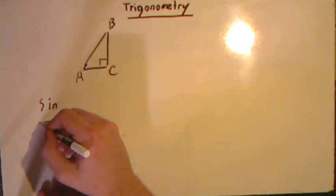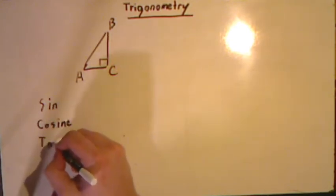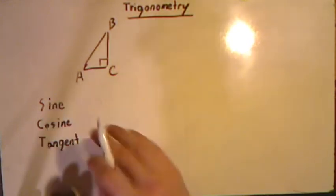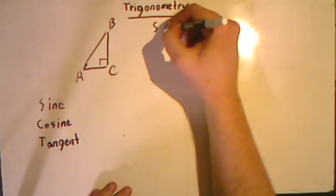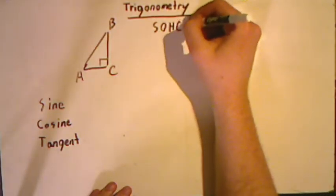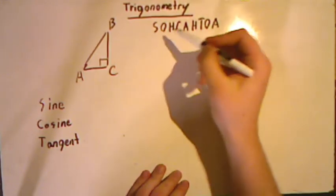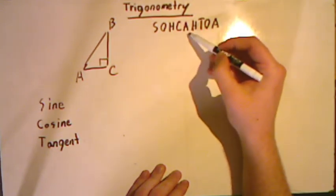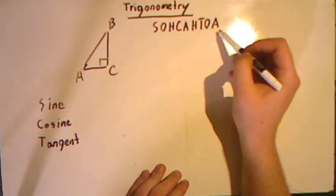Today we are going to be looking at sine, cosine, and tangent. Hopefully you guys remember these, but it was from the acronym SOHCAHTOA. Where sine was the opposite side over the hypotenuse, cosine was the adjacent side over the hypotenuse, and tangent was the opposite side over the adjacent.